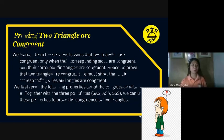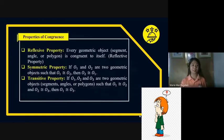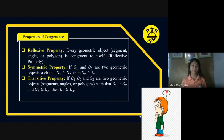Here are the properties of congruence. First, we have the reflexive property. Every geometric object — segment, angle, and even a polygon — is congruent to itself. In some books, the reflexive property can also be called the reflective property.